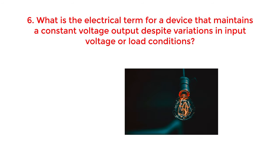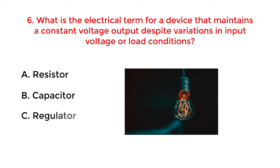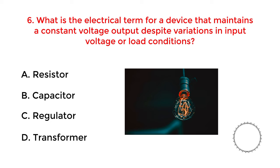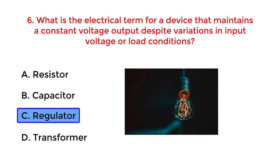What is the electrical term for a device that maintains a constant voltage output despite variations in input voltage or load conditions? A. Resistor. B. Capacitor. C. Regulator. D. Transformer. The correct answer is option C: Regulator.